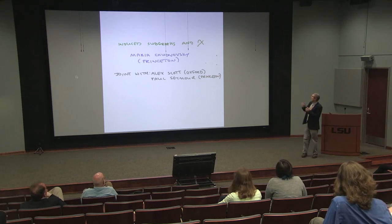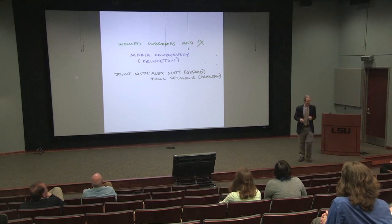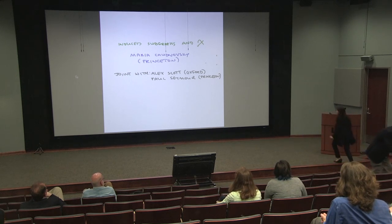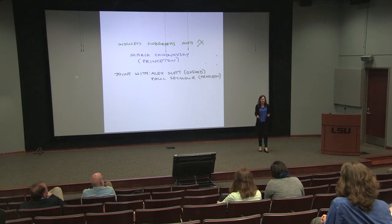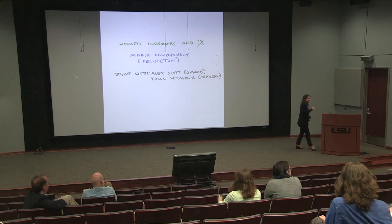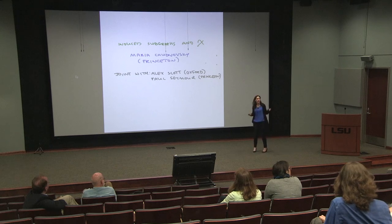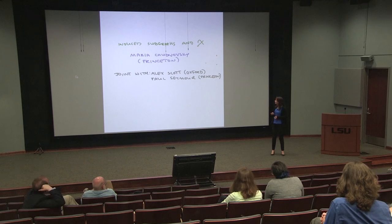So, Maria's third talk: youth subgraphs and colour. This is my third talk. When I talked yesterday, I said this is basically an advertisement for anything else I'm going to say. So this is an expansion of the last 15 minutes of what I did yesterday. There's some introduction I'm going to skip, and this is all based on joint work with Alex Scott and Paul Seymour.